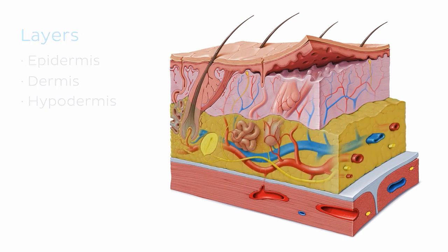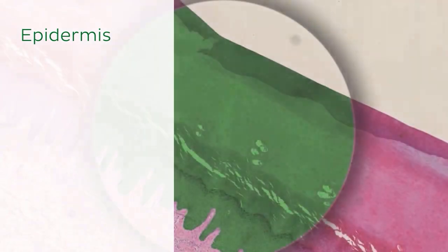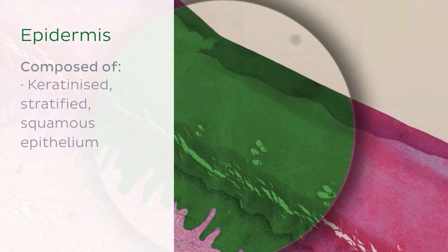We'll start with the outermost layer, the epidermis, first looking at its composition and then its five sub-layers. This image is a magnified view of thick skin, with the epidermis highlighted in green.